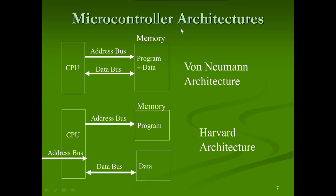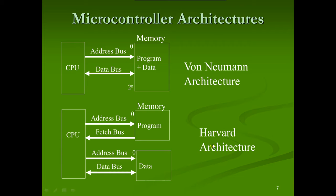Microcontroller architecture: there are two types — Von Neumann and Harvard. In Von Neumann architecture, the CPU shares a single memory for both data and program. The address bus connects the CPU to this combined memory, and a data bus carries information bidirectionally between the CPU and memory.